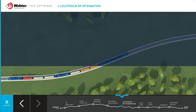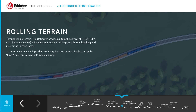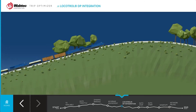Longer trains are heavier and require multiple engines positioned among cars — this is called distributed power. Through rolling terrain, TripOptimizer provides automatic control of low control distributed power in independent mode, providing smooth train handling and minimizing in-train forces.